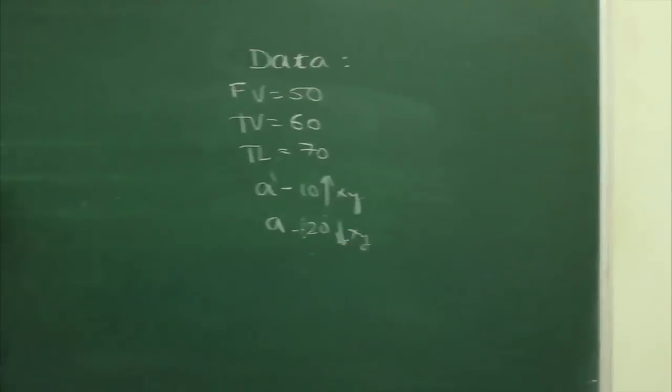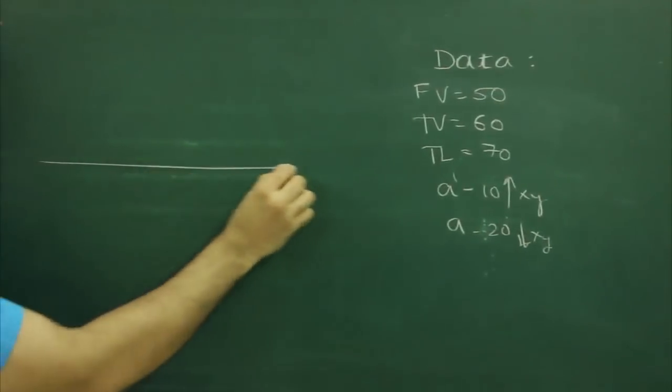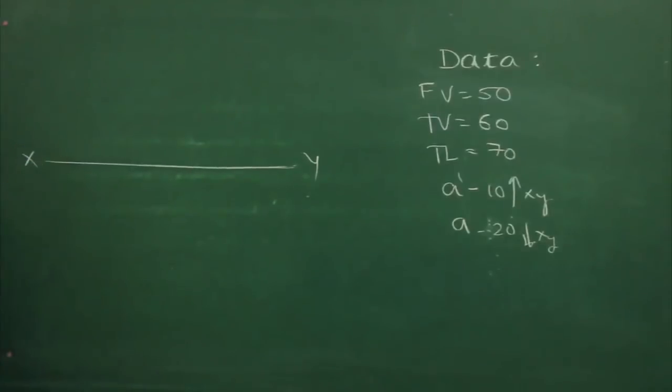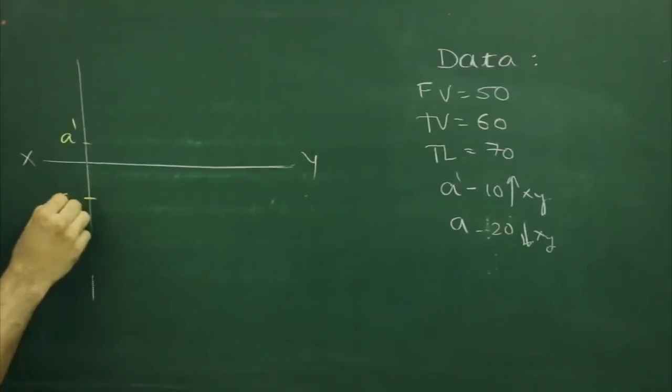We do x-y 9. Now first we will draw x-y 9, and we will mark point a dash and a.